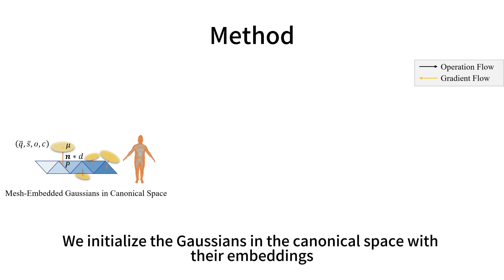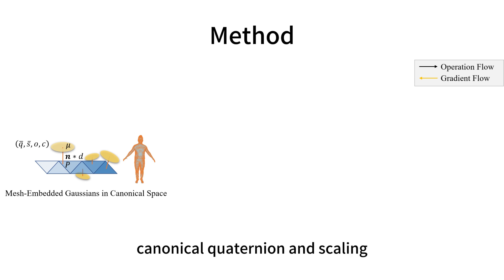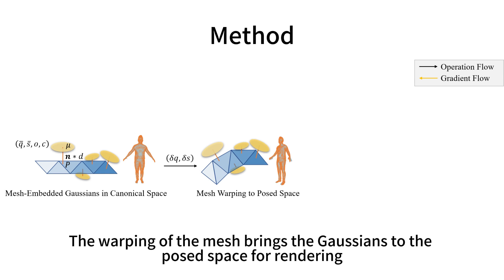We initialize the Gaussians in the canonical space with their embeddings, canonical quaternion and scaling, opacity, and color. The warping of the mesh brings the Gaussians to the posed space for rendering.